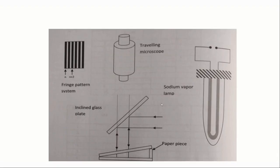This is the diagram of the experiment. The sodium lamp is the monochromatic light source. The inclined glass plate is set at an angle of 45 degrees. This is the air wedge setup; at one end we have placed a thin paper piece. The incident light radiation falls upon the inclined glass plate, refracts, and falls upon the air wedge. The reflected parts of this light radiation act as two light sources, and when observed through the travelling microscope, we can see the interference pattern due to the superposition of these two light radiations.